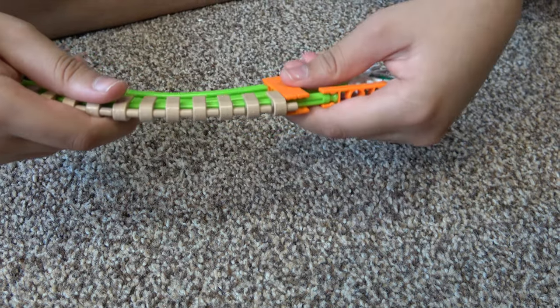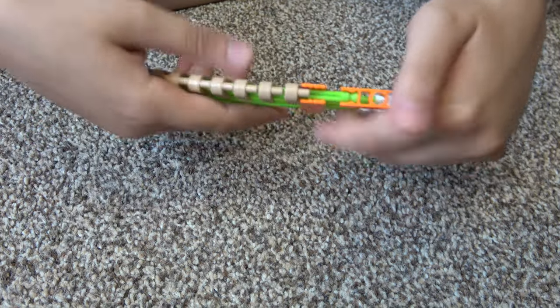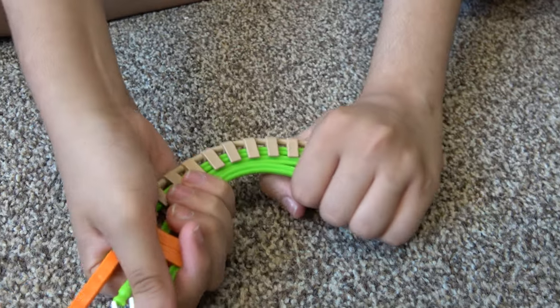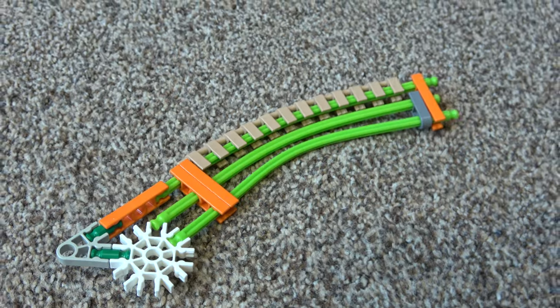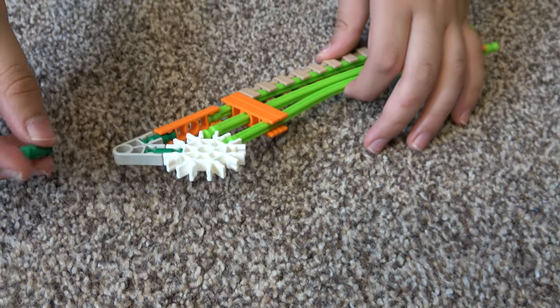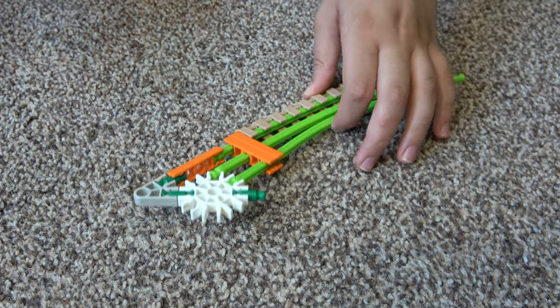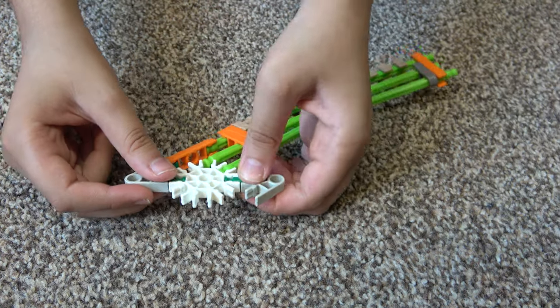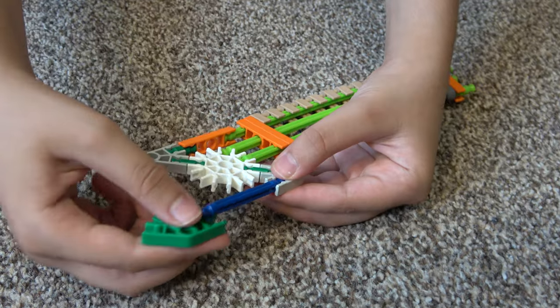So you're going to get it like that. You're going to bend it a bit. Because if you don't know, in Star Wars Count Dooku's lightsaber is bent. And then, next, you're going to get this. And finally, this. So here it is.